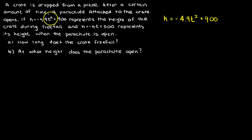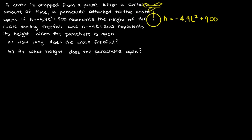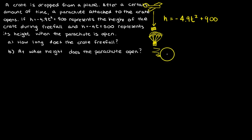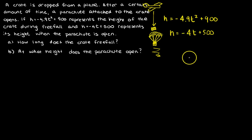This is the height of the crate during free fall — a crate is dropped from a plane. At a certain point it has a parachute, and it kind of drifts farther down. At first it's going really, really fast; then it's drifting nice and slow. When the parachute opens, the box floats down moving in a different path: H = −4T + 500. One of these is a quadratic; one is a linear function. Let's put both on a graph and see what that looks like.